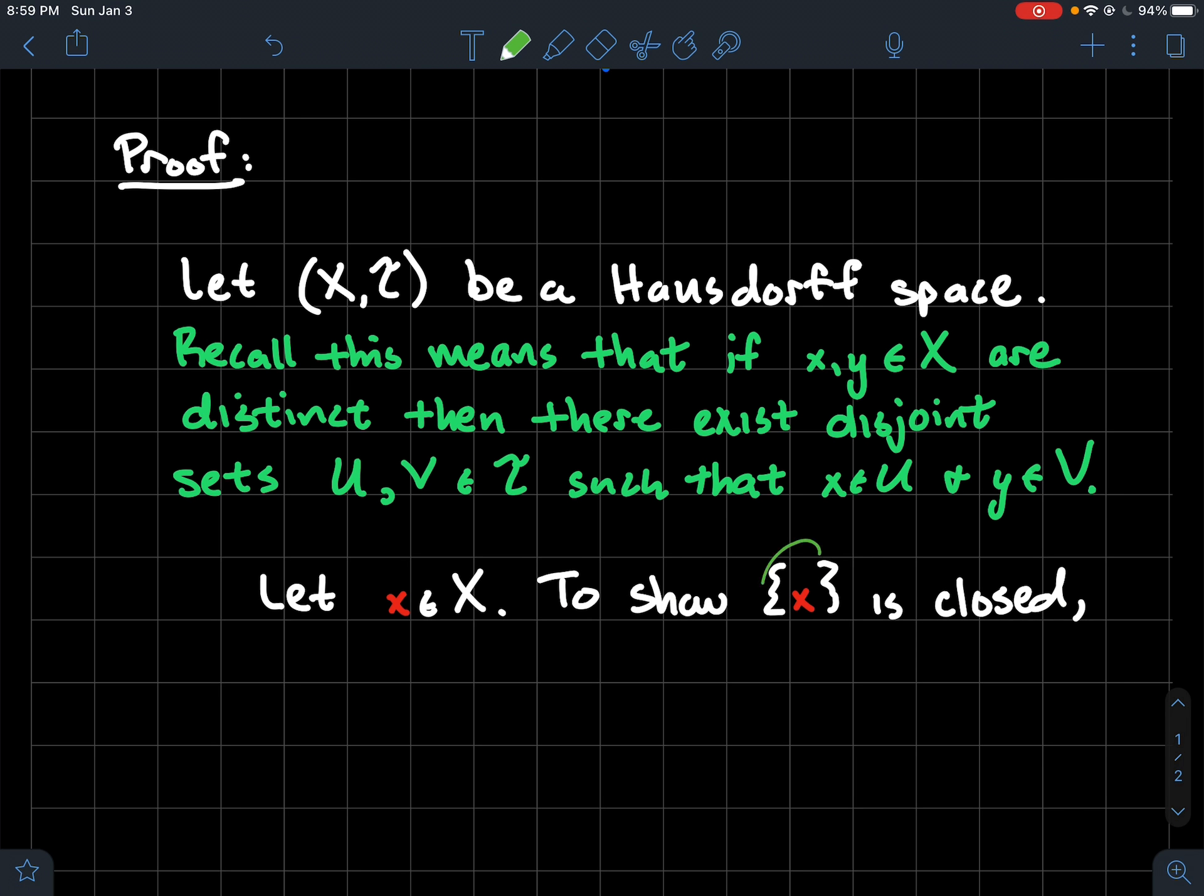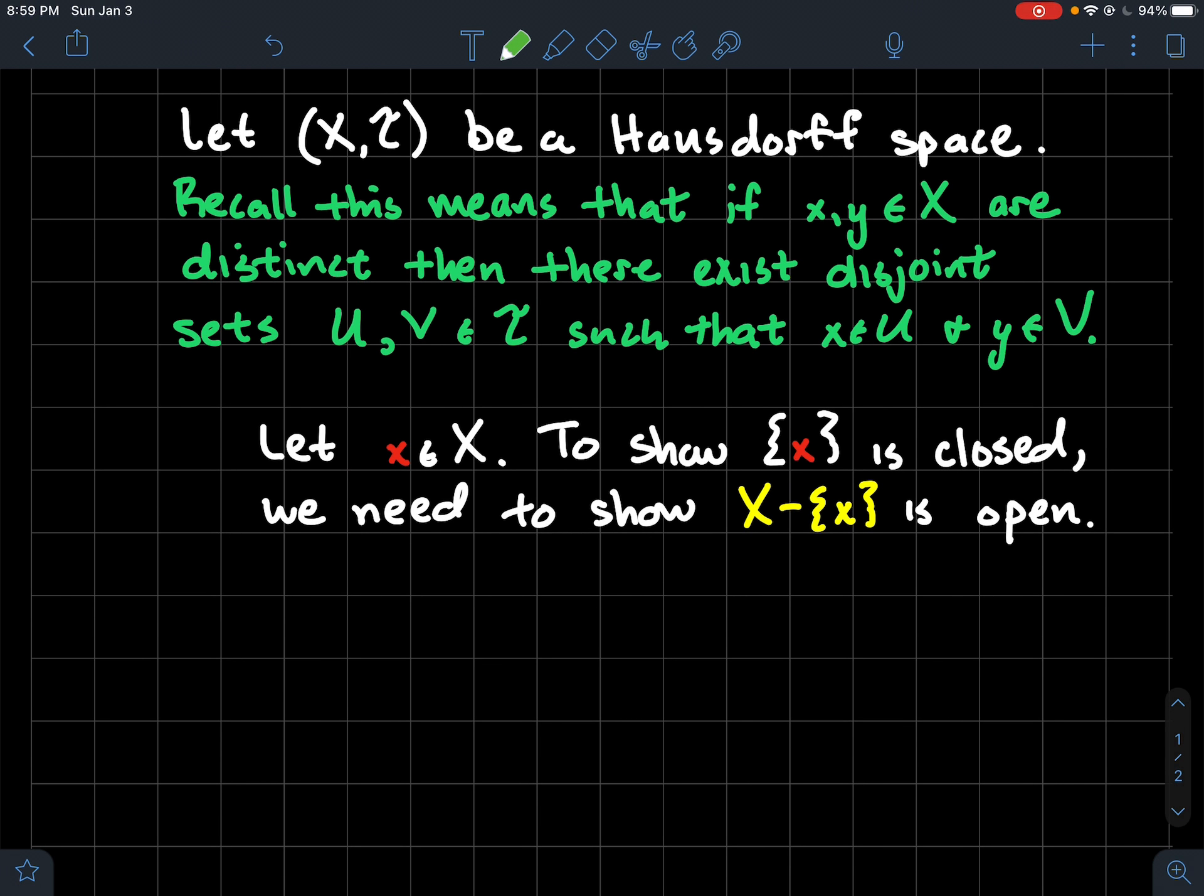In order to show that the set that just has one element x in it is closed, it's usually easier to try to show that the complement is open. That's the definition of closed in topology. So we need to show that the complement, X minus {x}, is open.